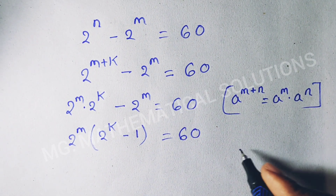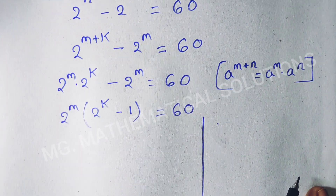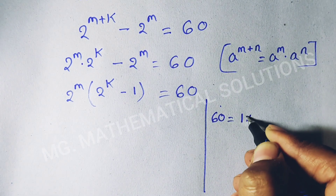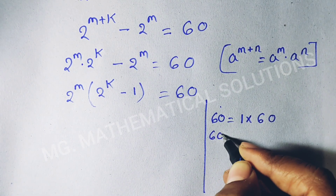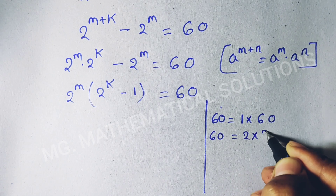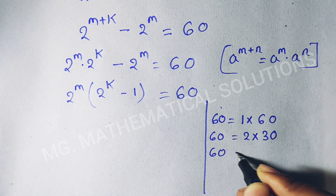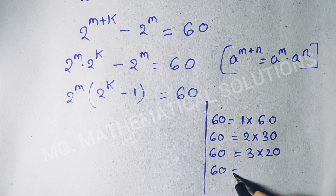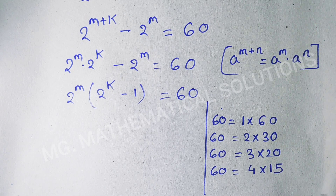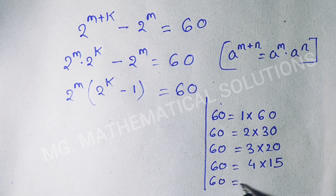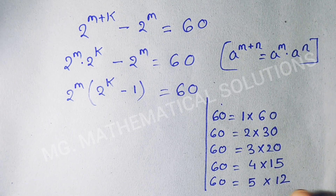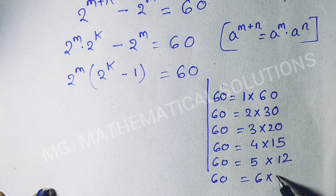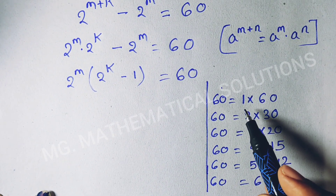Now, 60 we can write as: 60 equal to 1 times 60, 60 equal to 2 times 30, 60 equal to 3 times 20, 60 equal to 4 times 15, 60 equal to 5 times 12, and 60 equal to 6 times 10. So we get 6 cases.